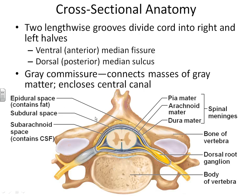Looking at a cross-section of the spinal cord, we can see it follows a pattern similar to other portions of the brain. The white matter of the spinal cord is located on the outside, and the gray matter is on the inside. Directly on the outside of the spinal cord, we have pia mater, then the subarachnoid space where the spinal fluid is found, then the arachnoid mater, then the dura mater, then a small fatty area, and then bone — very similar to what we saw with the brain itself.